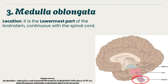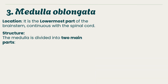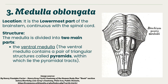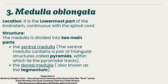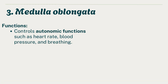The medulla oblongata is the lowermost part of the brainstem and is continuous with the spinal cord. It is divided into two main parts: the ventral medulla, which contains a pair of triangular structures called pyramids housing the pyramidal tracts, and the dorsal medulla, also known as the tegmentum.